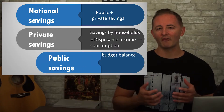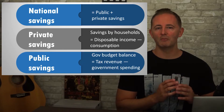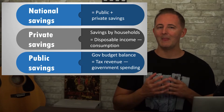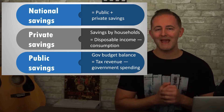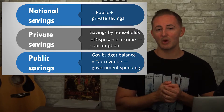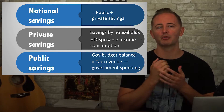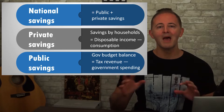Public savings refers to governments and is equal to tax revenue minus government spending. This number is very often going to be negative since the US federal government has made it a habit to run larger and larger deficits.